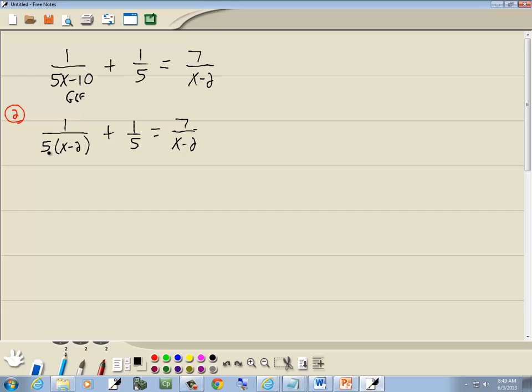Now let's start with the numbers. Let's start with the 5 first. I'm looking for the greatest number of 5s in any single denominator. There's 1 here, 1 here, none here. So the greatest number of 5s in any single denominator is 1. Then I go to my next factor, the x minus 2. I'm looking for the greatest number of x minus 2s in any single denominator. There's 1 here, none here, 1 here. So it would be 1. The answer to that question is almost always 1.